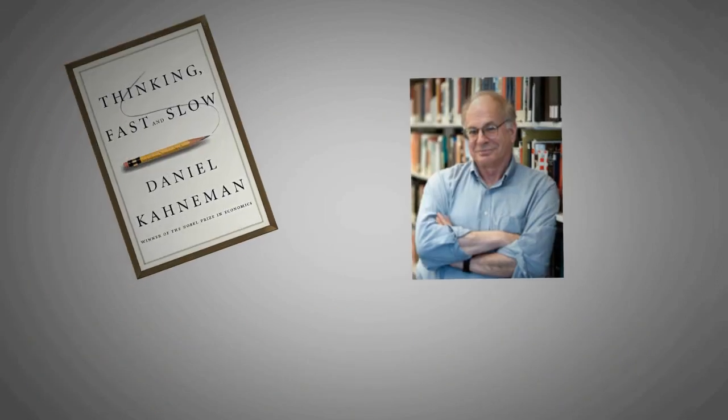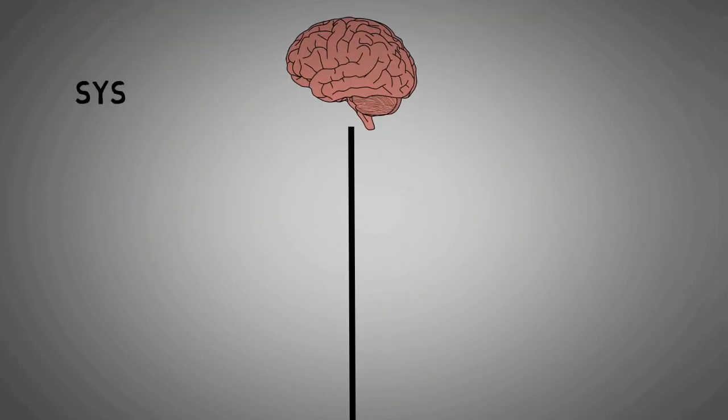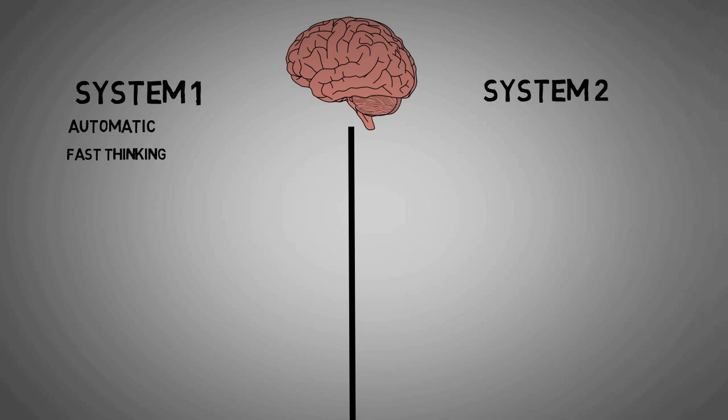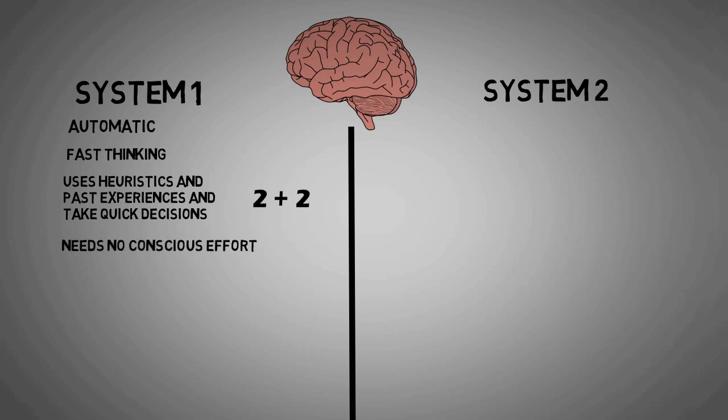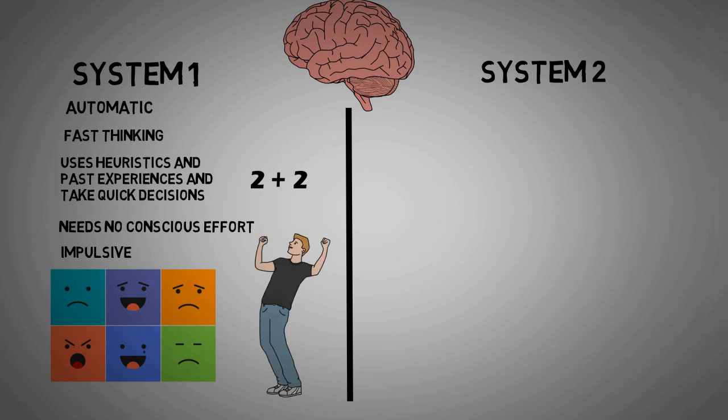Daniel Kahneman in his book 'Thinking Fast and Slow' talks about two parts of the brain. He explains it using the terms System 1 and System 2. System 1 part of the brain is automatic, fast thinking part of the brain which uses heuristics and past experience and takes quick decisions. Like if you ask someone two plus two, quick answer comes four. System 1 is impulsive. It creates impressions, feeling, memory, and is more creative. When we are happy, our System 1 works more than System 2.